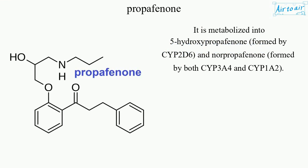It is metabolized into 5-hydroxypropafenone, formed by CYP2D6, and norpropafenone, formed by both CYP3A4 and CYP1A2.